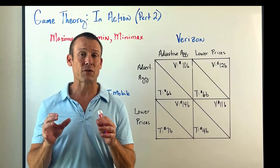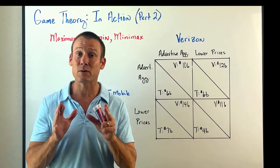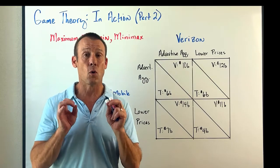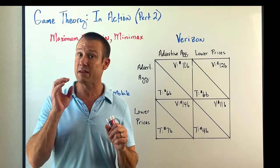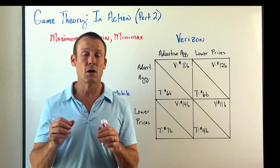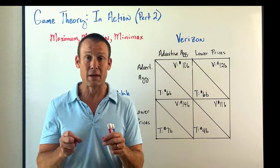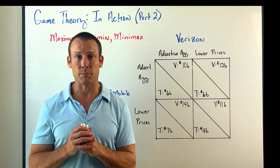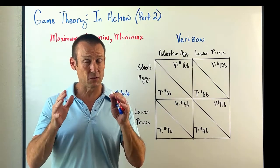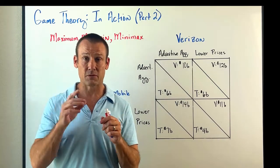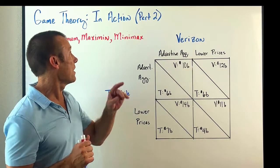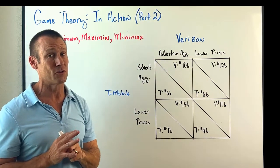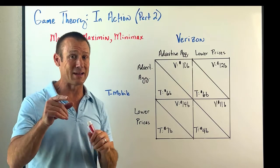Video three: we got to dominant strategy and how to assess whether or not a player has a dominant strategy. Video four: we talked about Nash equilibrium and how to determine if an outcome is a Nash equilibrium. Then in video five, we started to put this stuff in action — that was part one. This is part two.